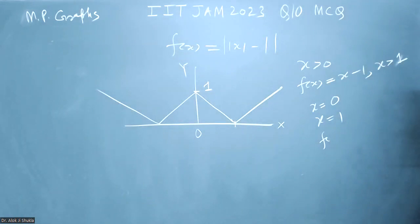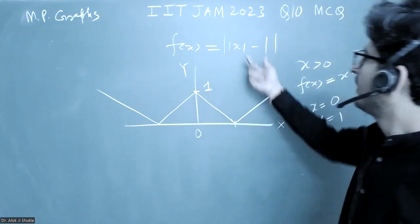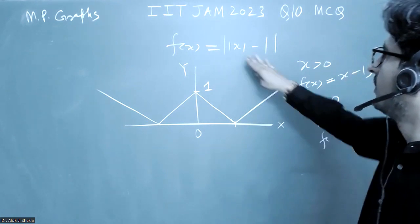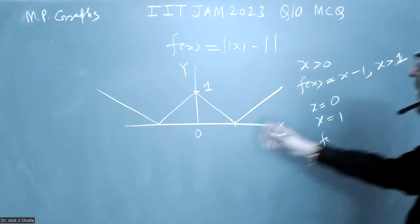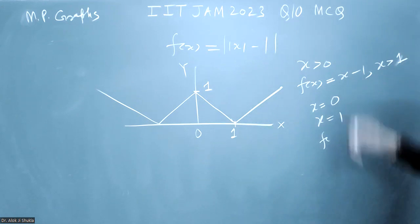So in modulus function, just try to see what makes it positive. First of all, see the positive side. So for x greater than 1, you have positive values. So if I plot it from here, I can just take f(x) equals x minus 1 and plot this part.